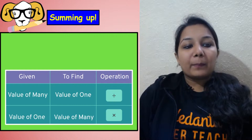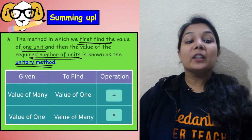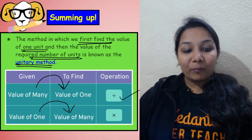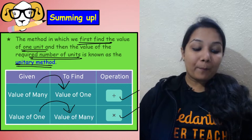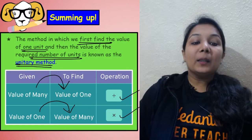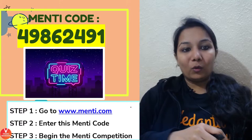Here is the summary of the session: unitary method is where we first find the value of one unit, and based on that we find the value of the required number of units. Going from many to one — you divide. Going from one to many — you multiply. The code for Menti part two is 4-9-8-6-2-4-9-1.